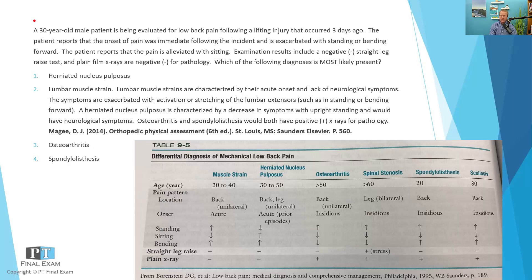Regarding the other options: a herniated nucleus pulposus would most likely require an MRI to truly visualize, and you'd likely have a positive straight leg raise test, reproducing neurological symptoms downstream from the herniated disc impinging on the nerve roots. Osteoarthritis and spondylolisthesis are both bony abnormalities likely to show up on x-ray — but importantly, these are typically not acute onset diagnoses. Osteoarthritis occurs over time, and spondylolisthesis usually involves a fracture of the pars intraarticularis, eventually causing slippage of the lumbar vertebral bodies anteriorly. Both typically have more of a history, and spondylolisthesis would likely also present with neurological symptoms if nerve roots in the lumbar spine were compressed.